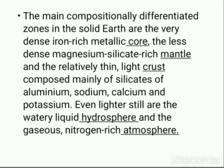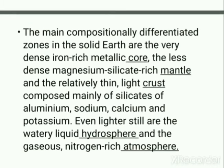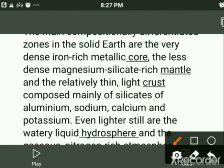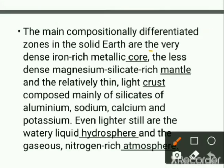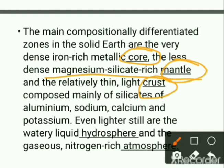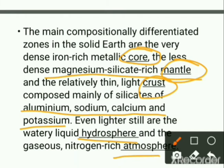The main compositionally differentiated zones in the solid Earth today are: the very dense iron-rich metallic core; the less dense magnesium silicate-rich mantle; and the relatively thin crust, composed mainly of silicates with aluminum, sodium, calcium, and potassium. Even lighter still are the watery liquid hydrosphere and the gaseous nitrogen-rich atmosphere. Earth's compositional layers are thus: core, mantle, crust, hydrosphere, and atmosphere.